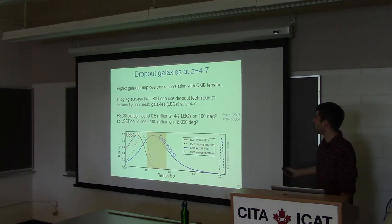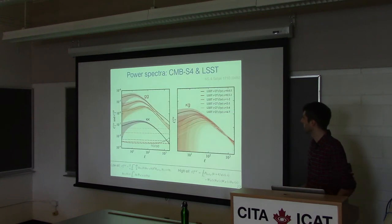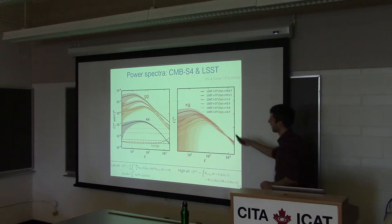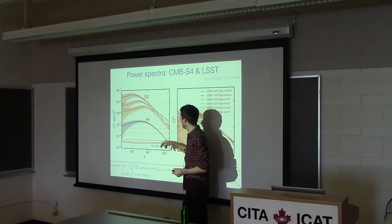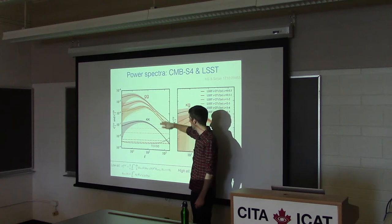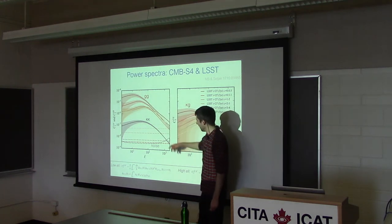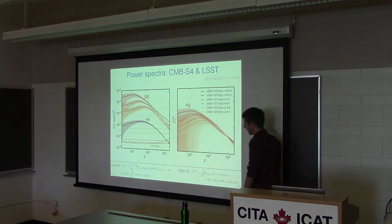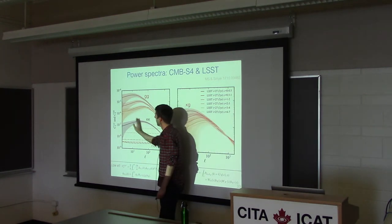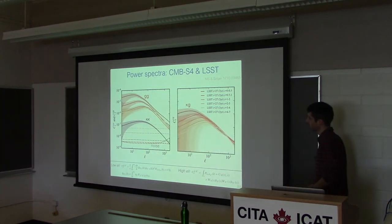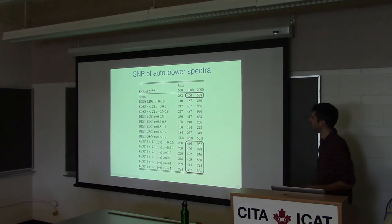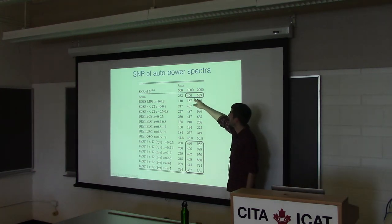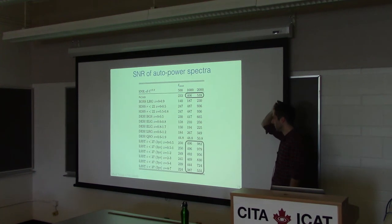The power spectra we expect from LSST and CMB-S4 show galaxy auto-power spectra that are signal dominated up to L of 1000 or higher. CMB-S4 lensing is signal dominated up to about 1000. Summing total signal-to-noise, for CMB-S4 you get something like 400 to 500 sigma for detection significance. For LSST auto-spectra, you get 500 sigma up to L of 1000 and around 1000 sigma going to L of 2000. These are huge signals in each individual redshift bin, because the galaxy number density is insanely high and shot noise is very low. Cross-correlations are also at the few hundred sigma level.